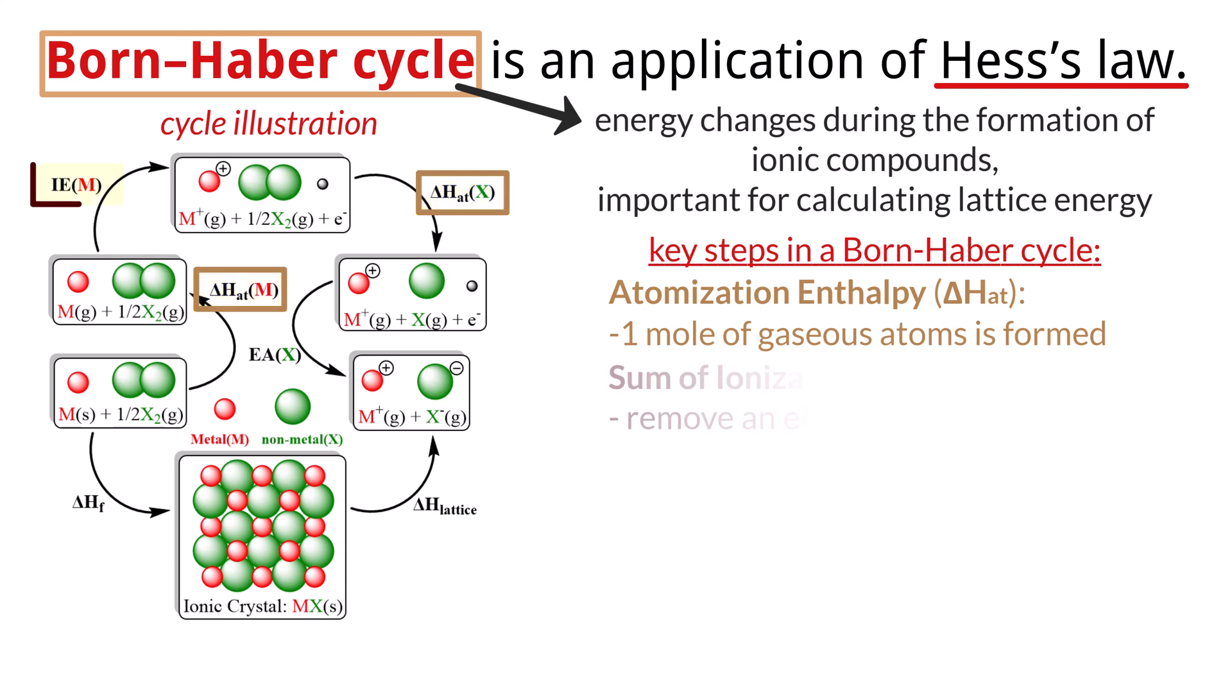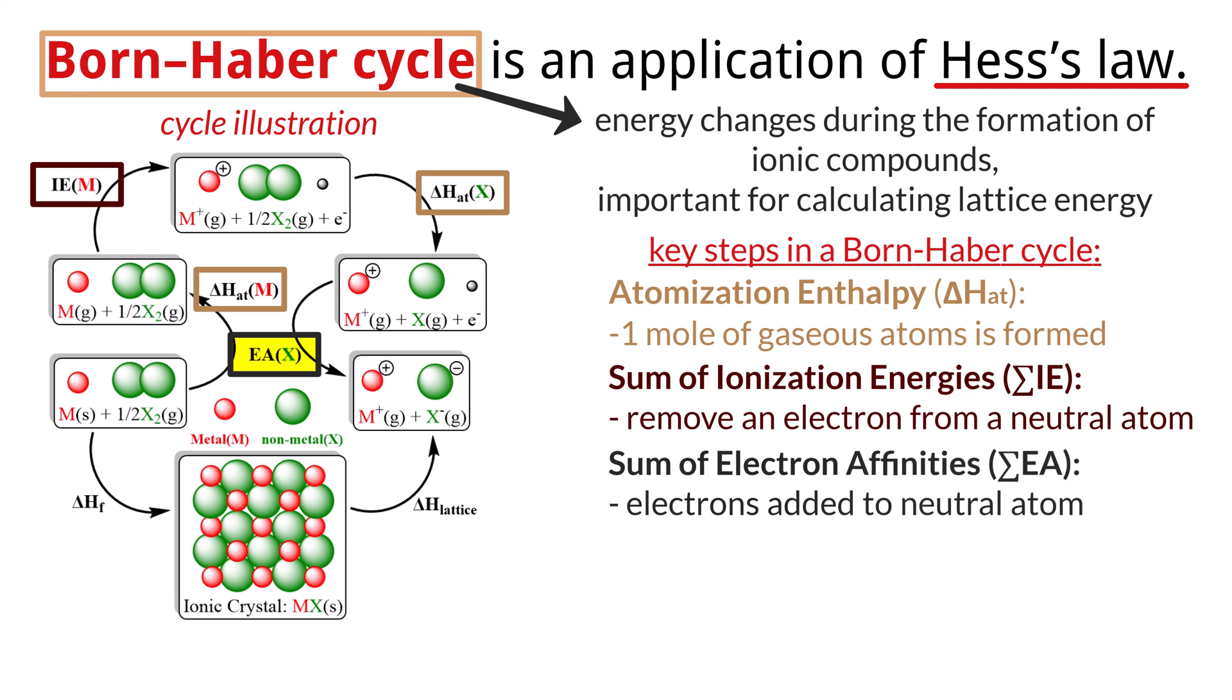Next is the sum of ionization energies. This is the total energy needed to remove electrons from a neutral atom to form a cation. This process requires an input of energy, making the values positive. Next is the sum of electron affinities. This is the energy released when electrons are added to a neutral atom to form an anion.